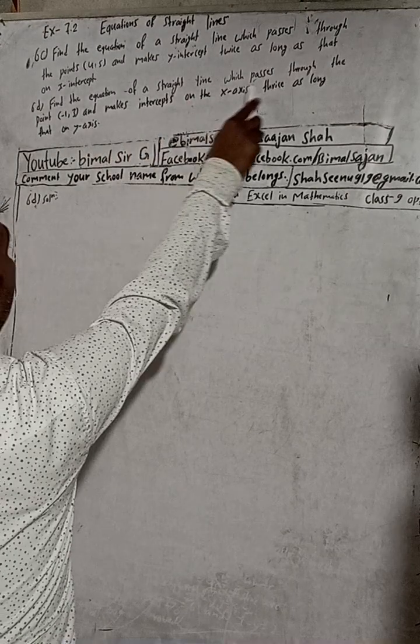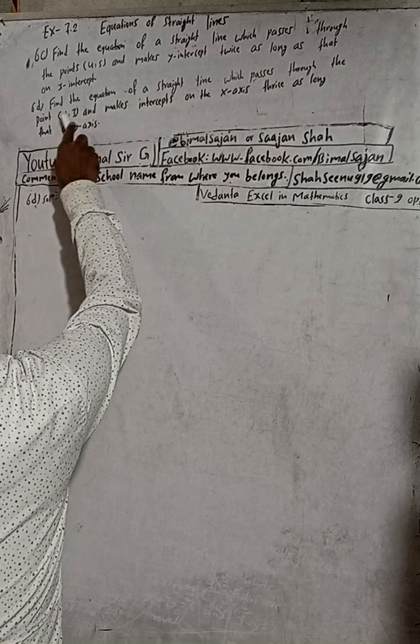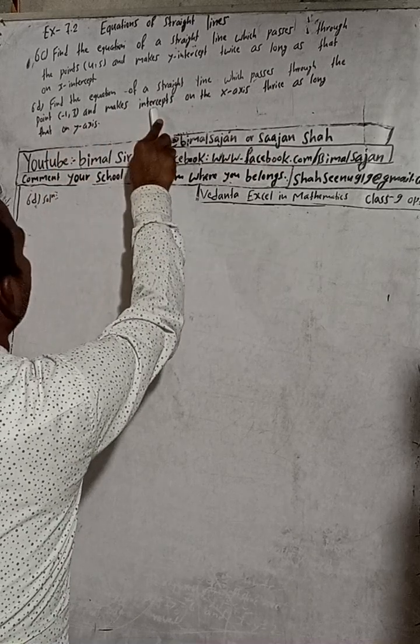Here the question is: find the equation of a straight line which passes through the point minus 1 comma 3 and makes intercepts on the x-axis thrice as long as that on the y-axis.